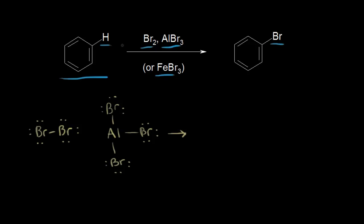Let's look at the mechanism for this electrophilic aromatic substitution reaction. The aluminum bromide catalyst has six electrons around the aluminum atom, so because of aluminum's position on the periodic table, it can accept two more electrons. Aluminum bromide functions as an electron pair acceptor — the definition of a Lewis acid. Bromine functions as a Lewis base, an electron pair donor, donating a lone pair to aluminum and forming a bond between the bromine and aluminum.